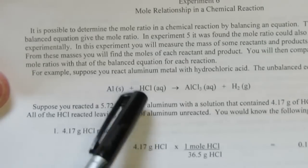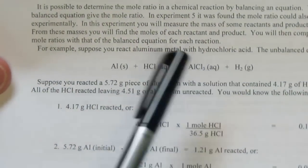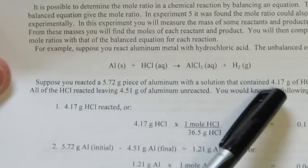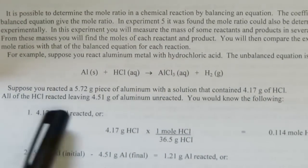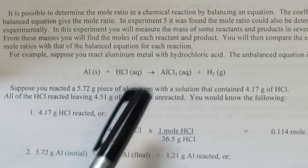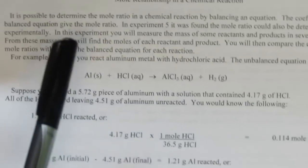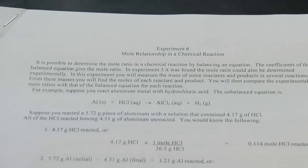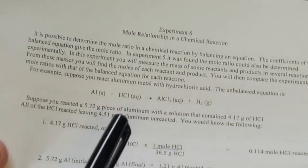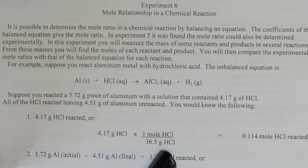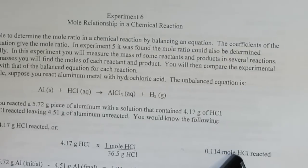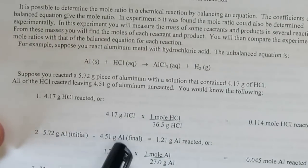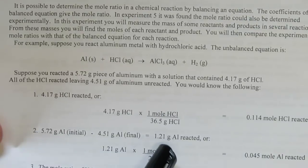Let me give you an example. Here's some aluminum reacting with hydrochloric acid, forming aluminum chloride and hydrogen gas. Suppose I started with 5.72 grams of aluminum and a solution that had 4.17 grams of HCl in it. All of the HCl reacts leaving 4.51 grams of aluminum unreacted. We would know that 4.17 grams of HCl did react, and we can convert that to moles by dividing by the molecular weight. We can then find the moles of aluminum that reacted. I started with 5.72 grams and there were only 4.51 grams left over, so 1.21 grams reacted.